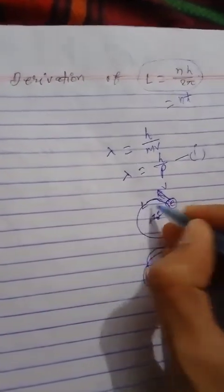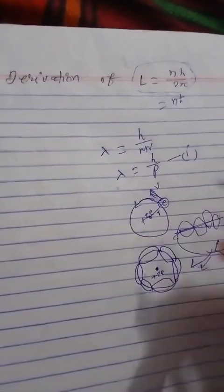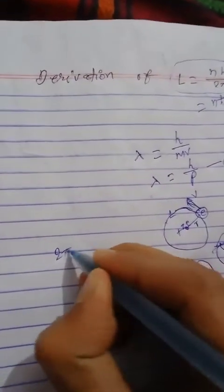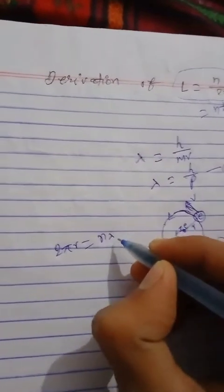So the length, suppose this is a string. So the length of the string is equal to its circumference, and this is actually 2πr. You know from the theory of standing waves, the standing waves will be formed only when the length of the string is equal to the integral multiple of lambda.